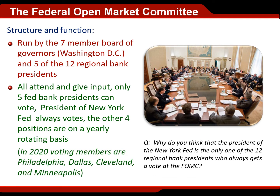Currently in 2020, the voting members are Philadelphia, Dallas, Cleveland, and Minneapolis. Why does the president of the New York Fed always get a vote? It's because New York has an oversized role in our economy — New York is the home of the US stock market. More practically, when the Fed does an open market action, it usually involves buying and selling US government bonds, and that buying and selling actually takes place at the New York Fed. So it makes sense that they would always have a say over monetary policy.